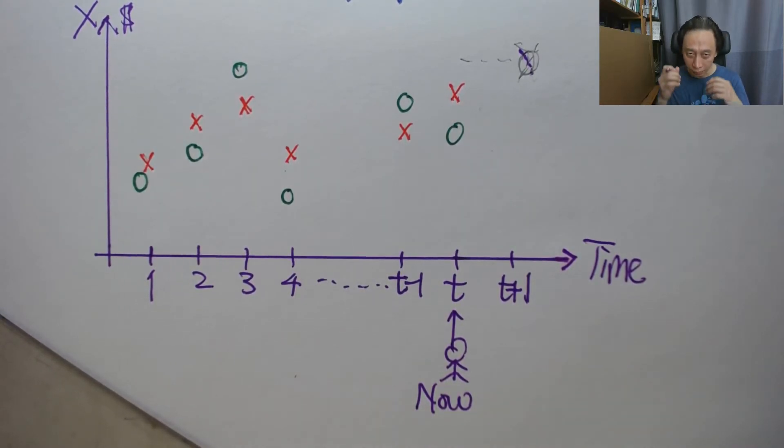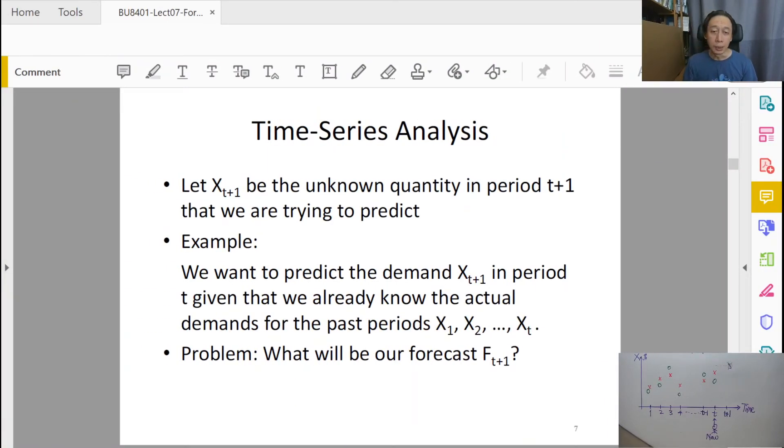So the goal remains the same in all time series methods. As the slide says, we are trying to predict the next value t plus one using all values here as well as f1 to ft. We would want to calculate for this number f of t plus one. How do we do that will depend on the algorithm that we choose.